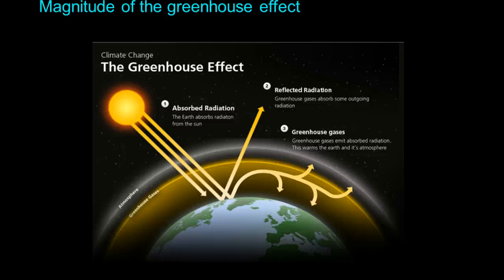So why the difference? The difference is the greenhouse effect caused by the presence of our atmosphere. It's the Earth's surface that heats up the atmosphere. The sun's radiation is absorbed by the ground and given off as infrared heat. As you can see from this diagram, our atmosphere has the effect of keeping this heat from escaping the Earth's surface — it traps it. If there were no atmosphere, all that heat would go out into space.